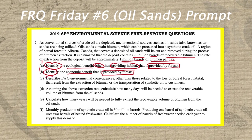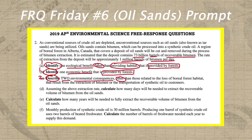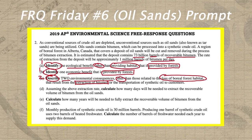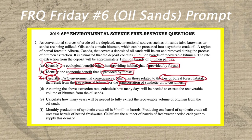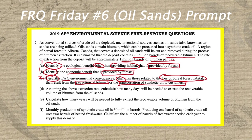In letter C, we have a describe prompt — circle it and write a two next to it. We're describing two environmental consequences, other than those related to loss of boreal forest habitat, that result from either the extraction of bitumen or the transportation of synthetic oil to customers. Let's reread it: we need two different environmental consequences, they can't be related to loss of boreal forest habitat, and they must result from extracting the bitumen or transporting the synthetic oil. Those last two parts are crucial — once you answer, ask yourself: did I connect these environmental consequences to extracting bitumen or transporting the synthetic oil to customers?